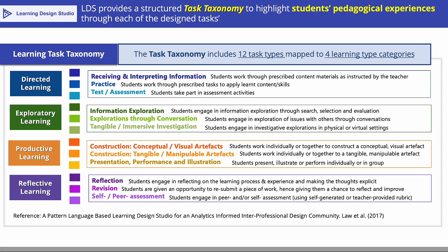The LDS Learning Task Taxonomy includes four learning type categories, each representing one type of learning experience associated with one type of learner role: directed learning, exploratory learning, productive learning, and reflective learning. Each learning type comprises three task types. For example, there are three types of exploratory learning: information exploration, exploration through conversation, and tangible or immersive explorations. Hence there are altogether 12 task types in the LDS task taxonomy.